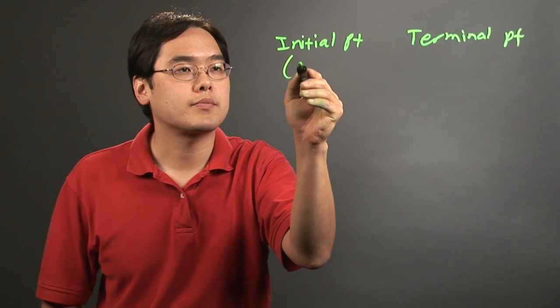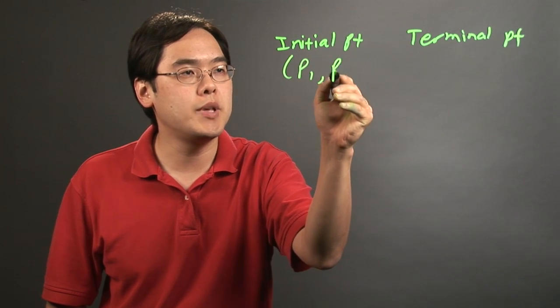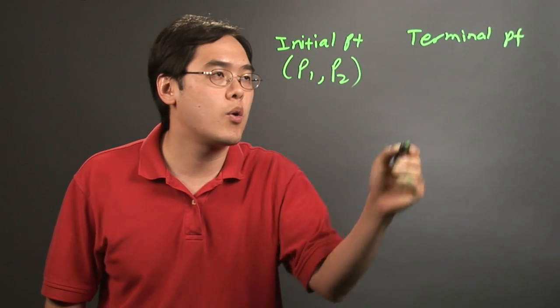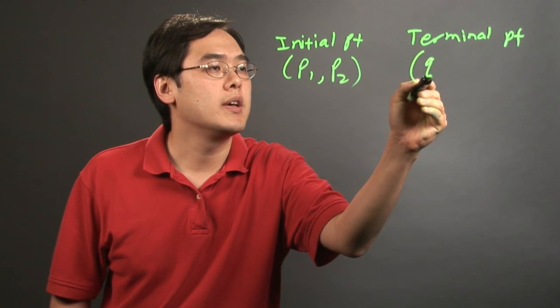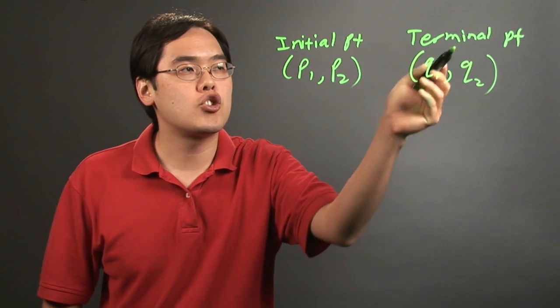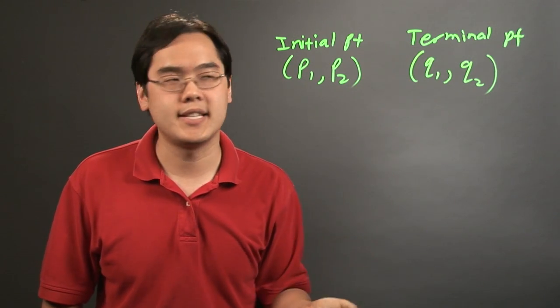Now an initial point is labeled P1 and P2, where P1 is the x-coordinate, P2 is the y-coordinate, and the terminal point is Q1 and Q2. So initial point is where you're starting from, terminal point is where you're ending at.